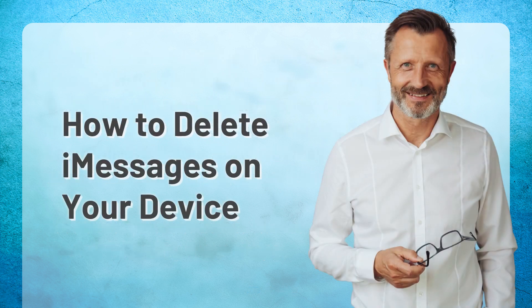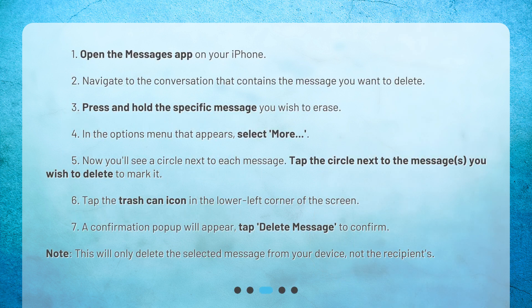How to delete iMessages on your device? 1. Open the Messages app on your iPhone. 2. Navigate to the conversation that contains the message you want to delete. 3. Press and hold the specific message you wish to erase. 4. In the Options menu that appears, select More.